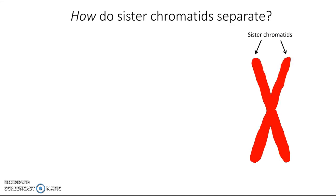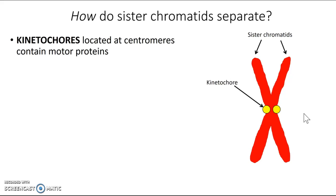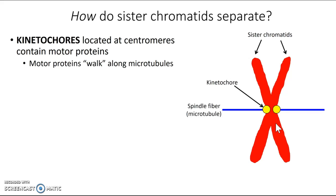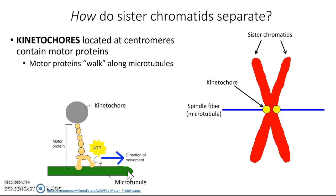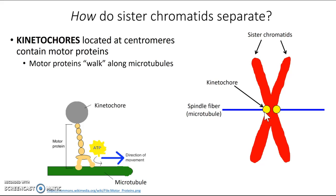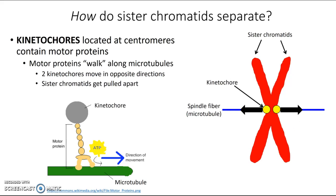But how do they do that? If we zoomed in on the sister chromatids, we would see that they have special structures on each side called kinetochores. Kinetochores are located at the centromeres of the chromosome and contain motor proteins. Motor proteins can walk along microtubules, so these kinetochores line up with the spindle fibers and actually walk along the microtubules. The two kinetochores move in opposite directions, and this pulls apart the two sister chromatids to opposite ends of the cell.